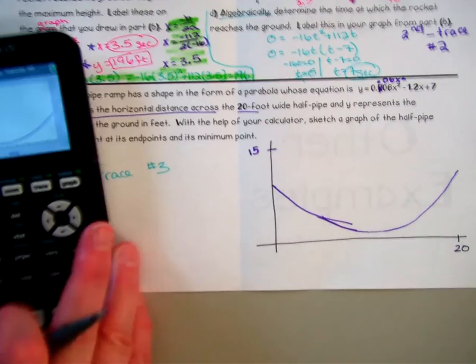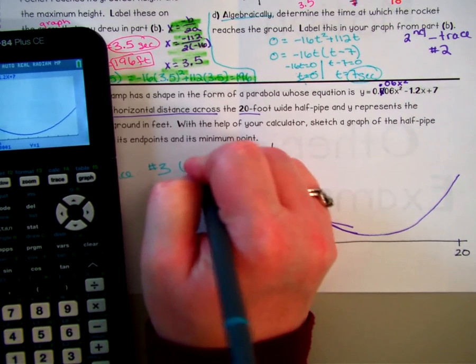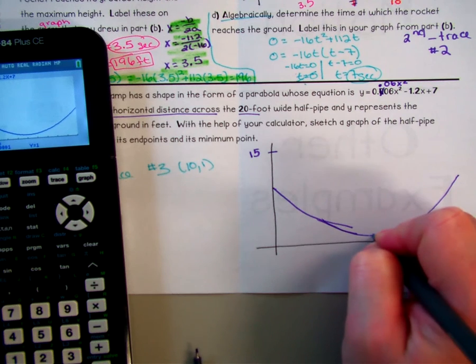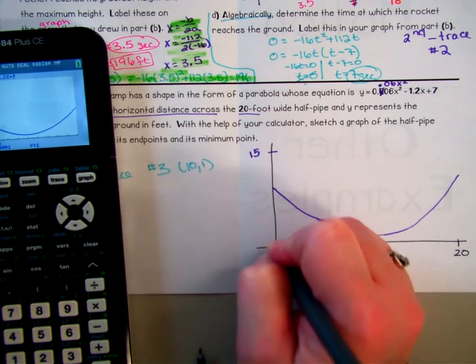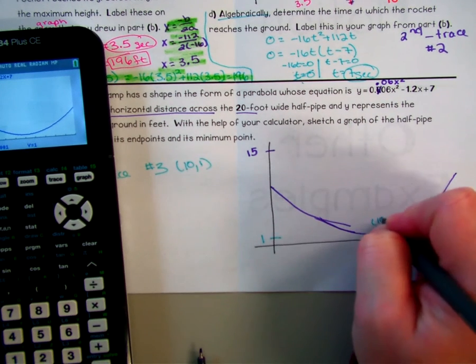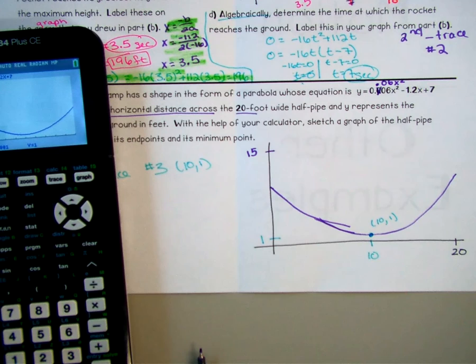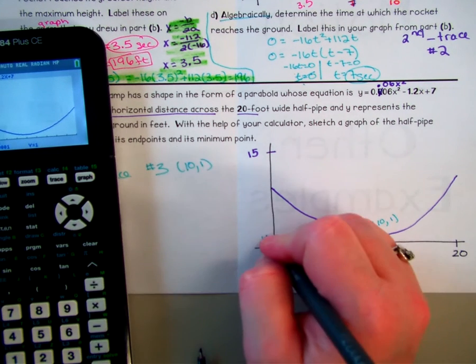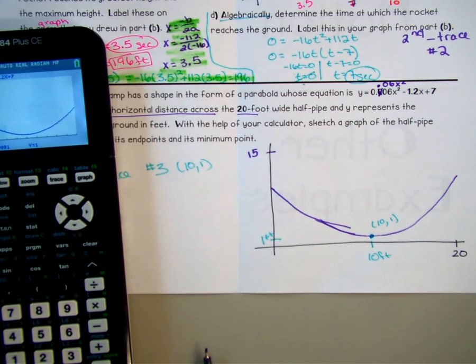10, 1. So right here, 10, and then 1. 10, 1. So at 10 feet, it's one foot off the ground. That is what our minimum is saying, 10 feet along the horizontal, it is one foot off the ground. All right.